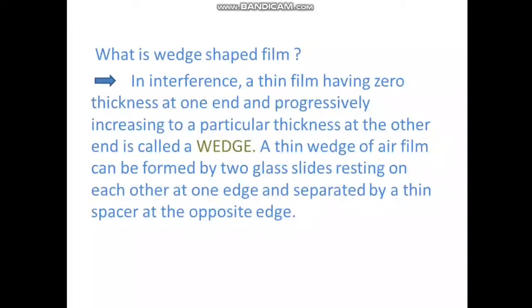An optical medium is called thin film when its thickness is about the order of one wavelength of light in visible region. Thus, a film of thickness in the range of 0.5 micrometer to 10 micrometer may be considered as thin film.